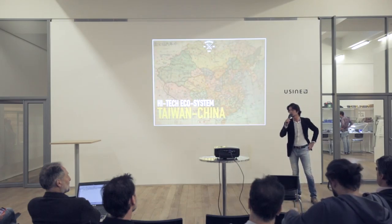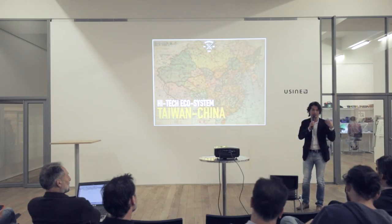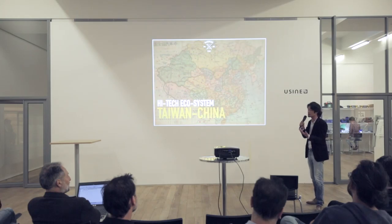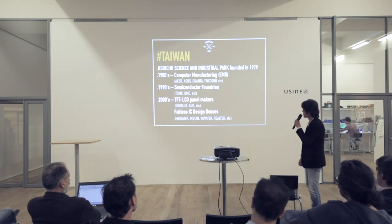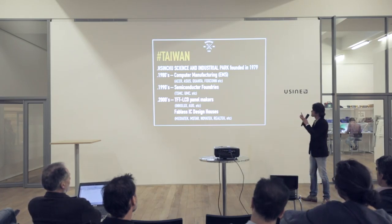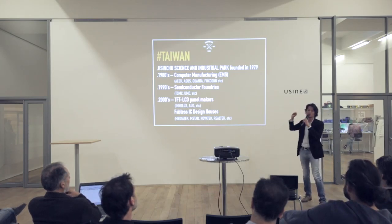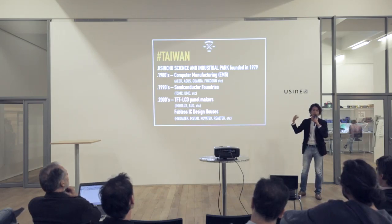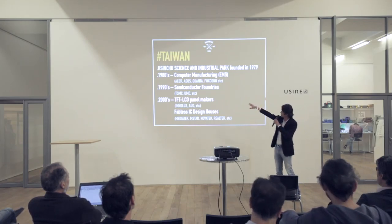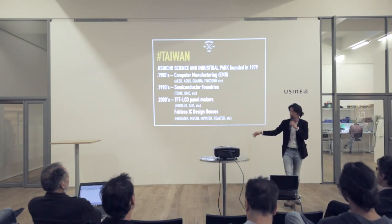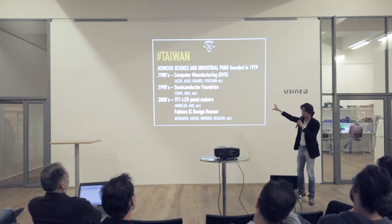A lot of people say 'we're going to China for manufacturing,' but it's funny because the entire ecosystem actually started with the Taiwan-China relationship. Taiwan started the Hsinchu Science Industrial Park in the late 1970s and early 1980s. Taiwan was the first place to reinvent the idea of contract manufacturing — EMS firms were born out of Taiwan. Look at Acer, Asus, Quanta, and Foxconn — they're all Taiwanese companies.